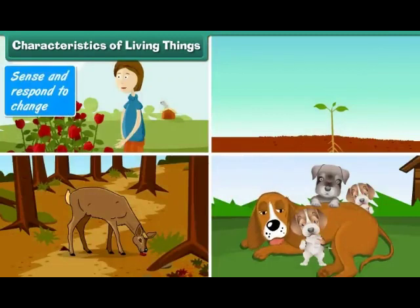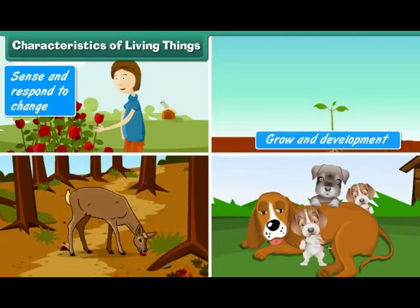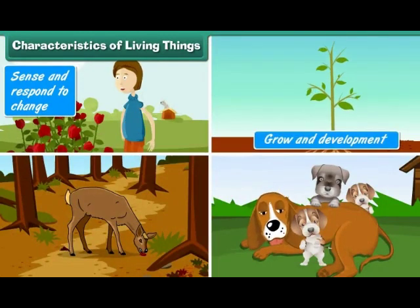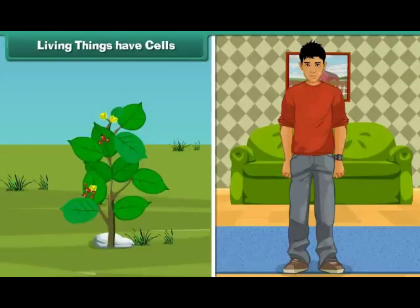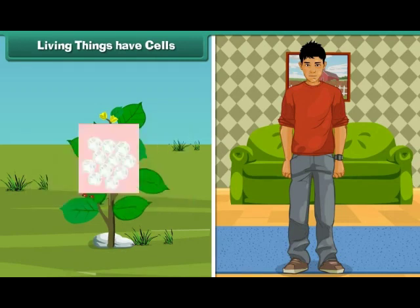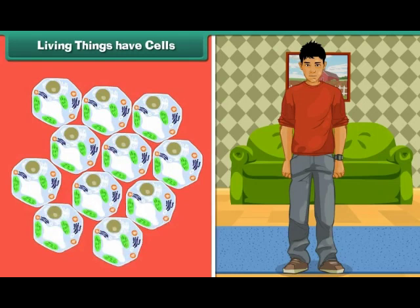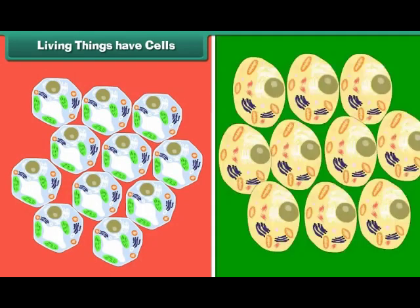Living things sense and respond to change, show growth and development, give off waste, and reproduce. Each living being has a distinct individuality and cannot be broken into two or more independent parts. The body of a living being is made of one or more cells.